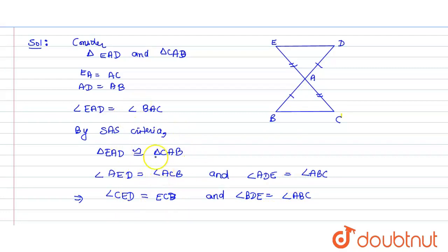Hence, we have proved the two conditions for these lines to be parallel. That's why line DE is parallel to BC. This is the required proof for the given question.